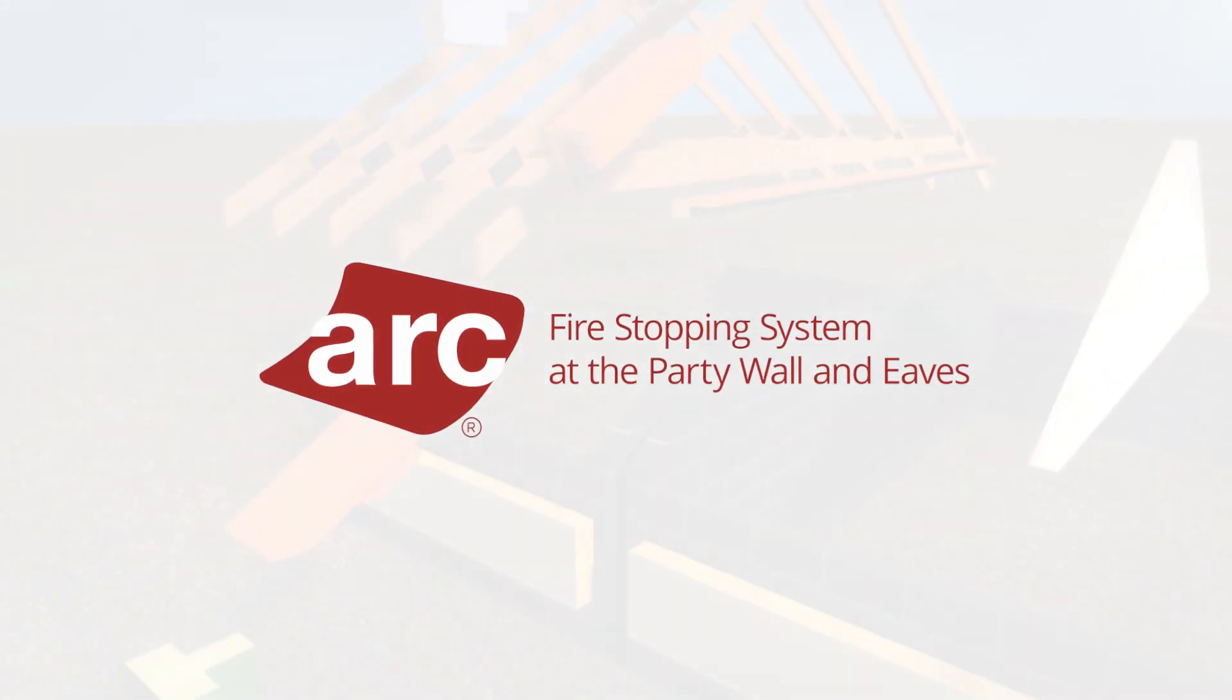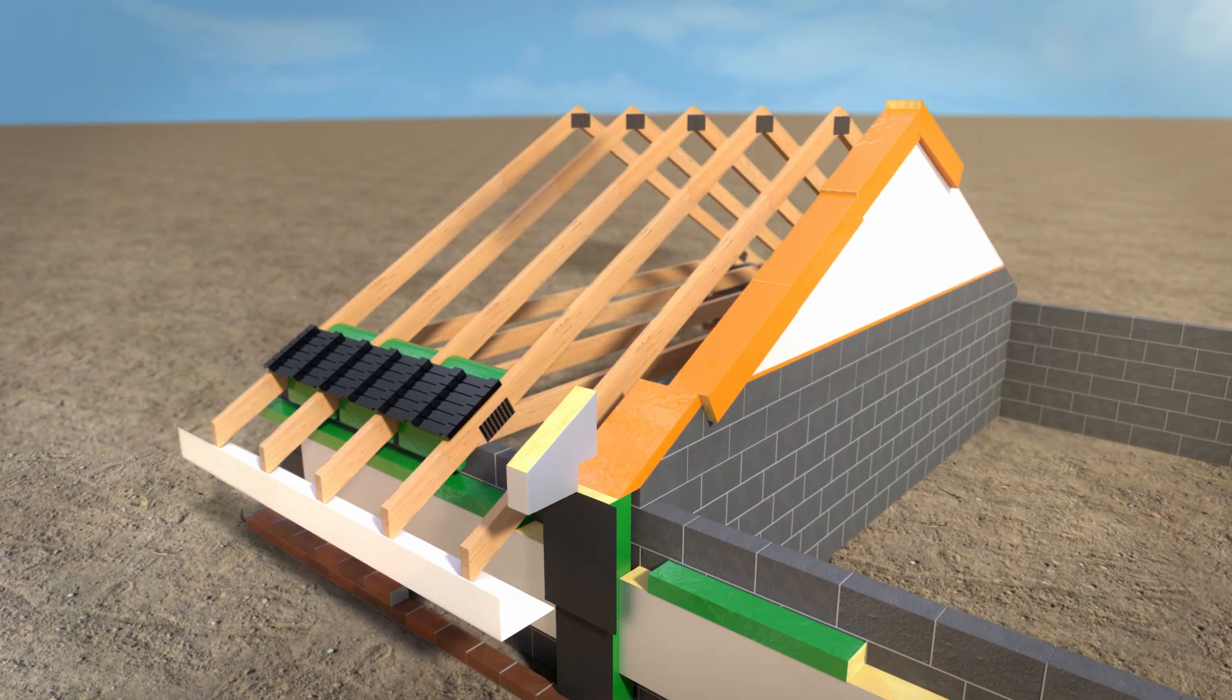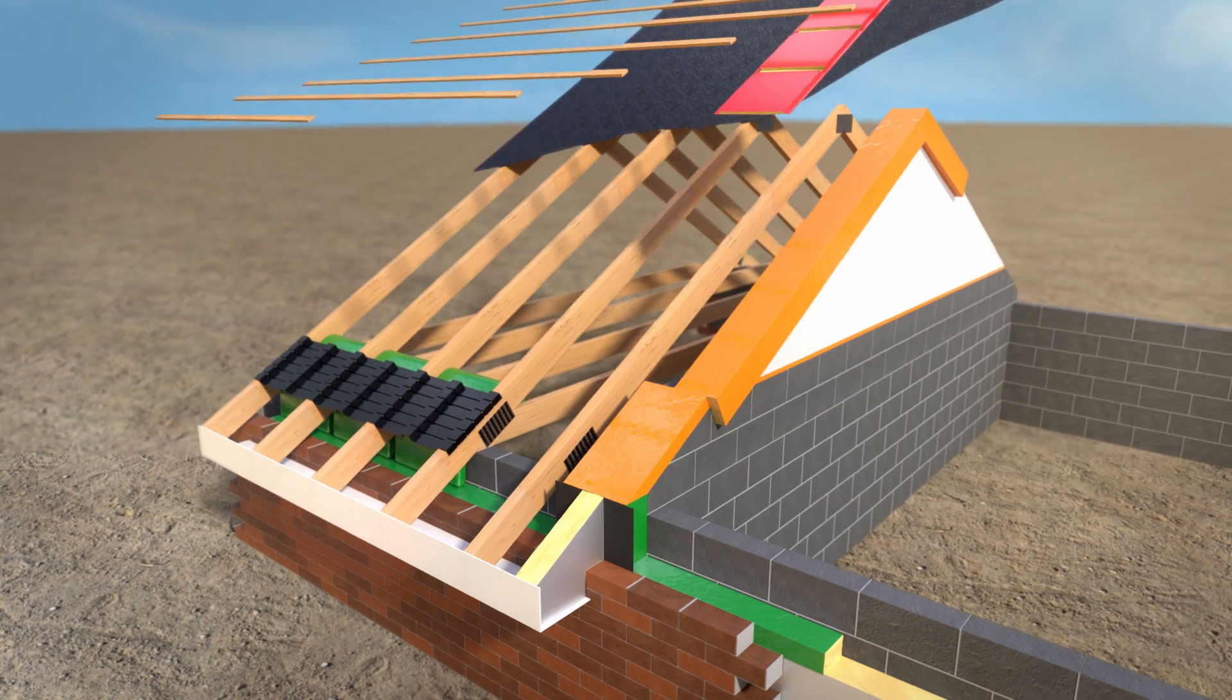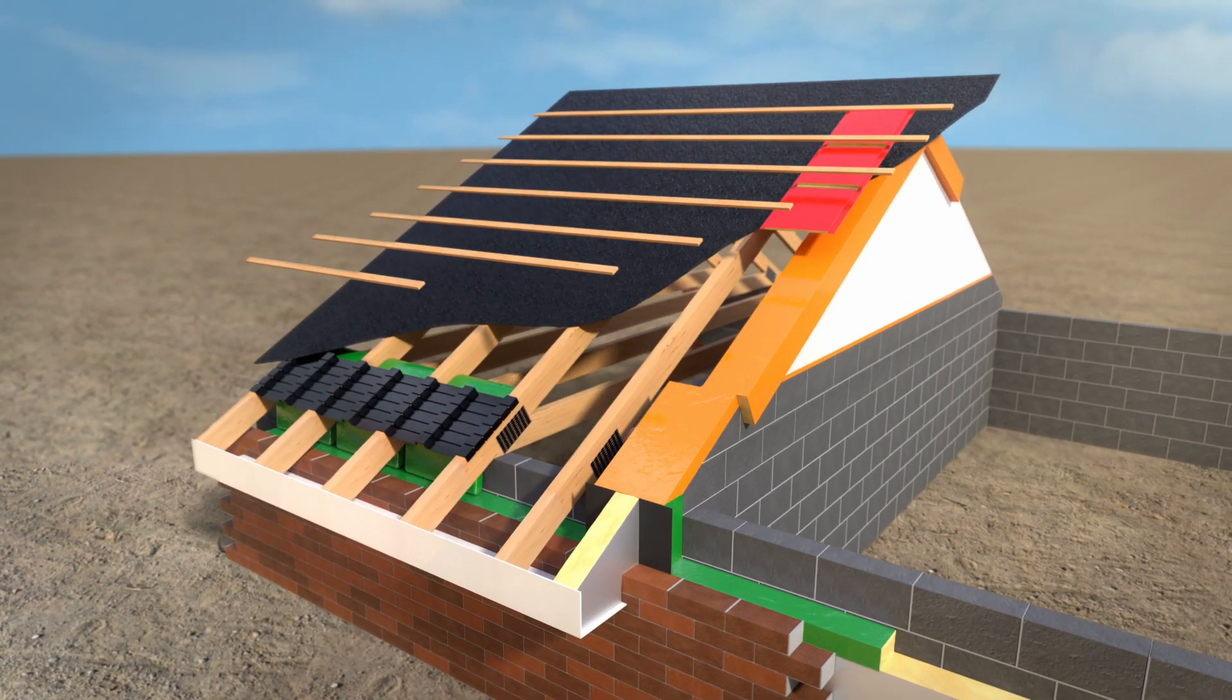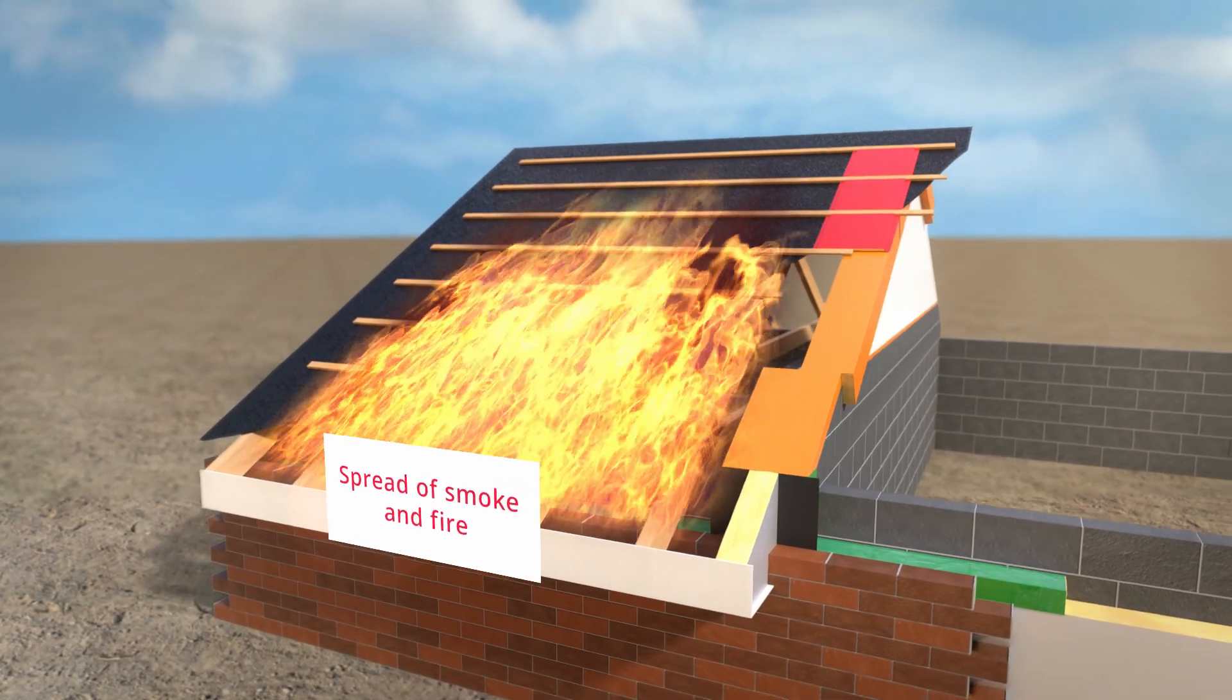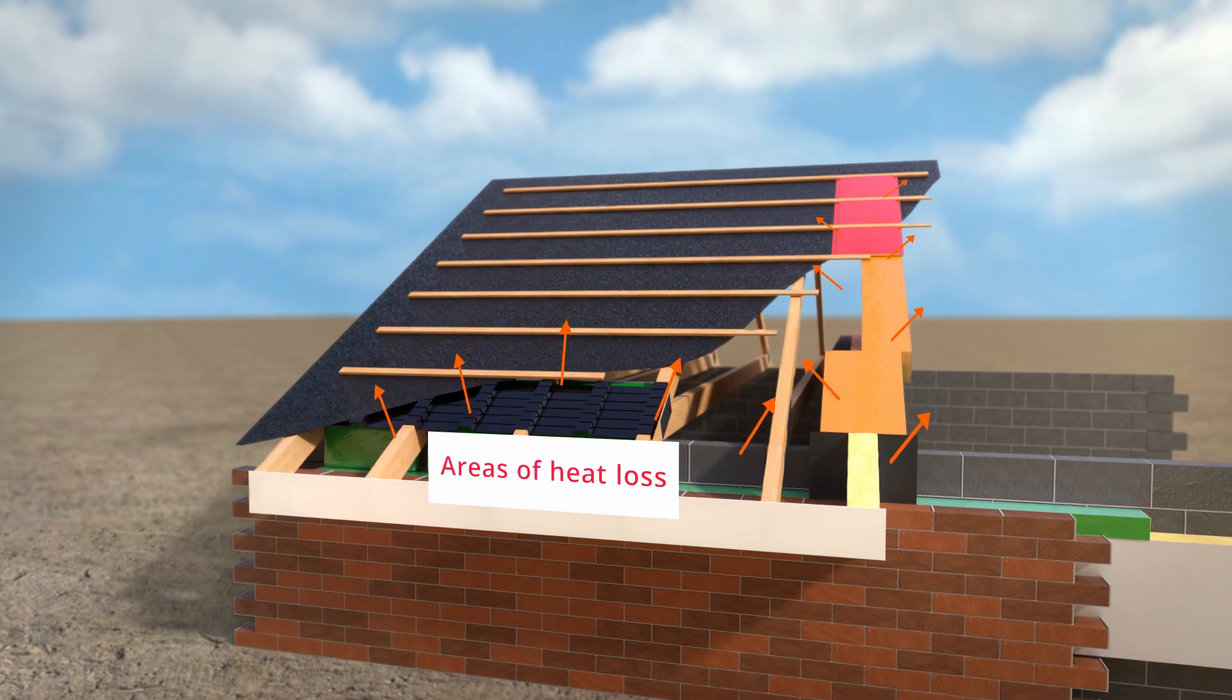Arc Building Solutions has developed a complete solution to prevent the spread of fire between semi-detached and terraced houses. Arc's unique products not only prevent the spread of smoke and flames, but also provide an effective edge seal at the party wall and eaves detail, preventing heat loss known as thermal bypass.